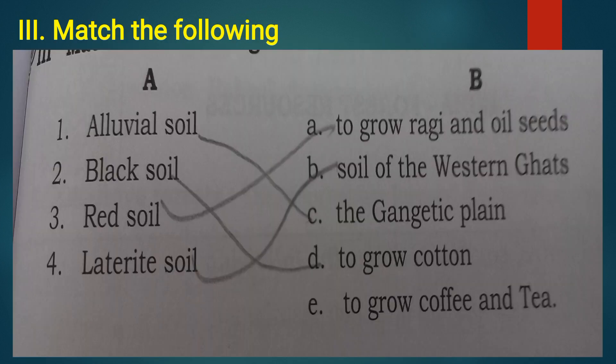Next, third main question, match the following. In A section, first one, alluvial soil. Second one, black soil. Third one, red soil. And the fourth one, laterite soil. In B section, A to grow ragi and oil seeds. B, soil of the western ghats. C, the Gangetic plain. D, to grow cotton. And E, to grow coffee and tea.